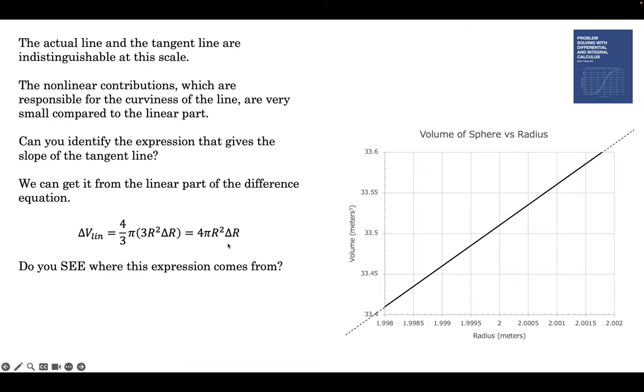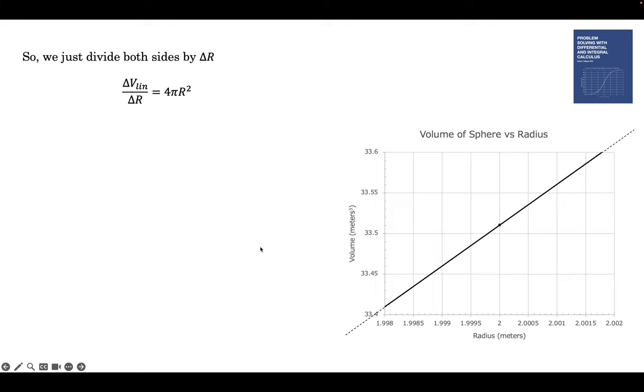If you want to calculate the slope, the slope is the rise over the run. The rise is delta v linear, and the run is delta r. So the slope of the tangent line is rise over run, and we know what this expression is. We just take the delta r and put it in the bottom, and we get 4 pi r squared. That's the slope of that line at any r. If I want the slope of this line at r equals 2, I stick in 2, and I get the slope. If I want it at 1, I stick in 1, and I get the slope. That's the power of differential calculus. It gives you the slope everywhere. As a function of the horizontal variable.